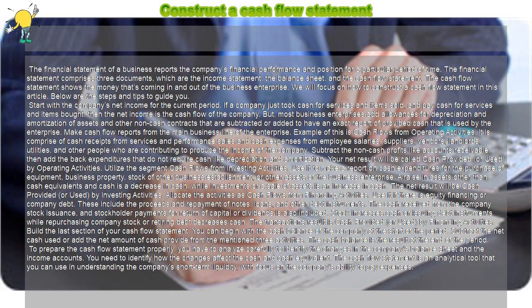Make cash flow reports from the main business line of the enterprise. An example of this is Cash Flows from Operating Activities. It is comprised of cash receipts from services and performance sales, and cash expenses from employee salaries, suppliers, vendors, landlords, utilities, and other people who are contributing to produce the income of the company.